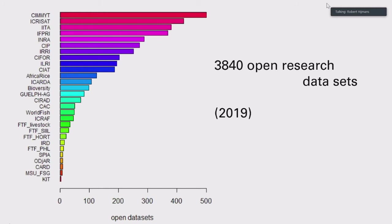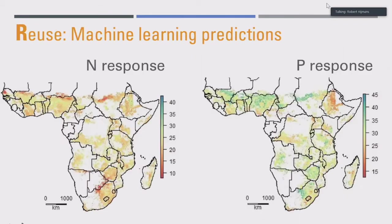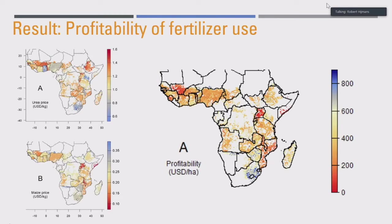We were interested in questions around soil fertility, fertilizer use, and crop responses in Africa. Camila did searches around maize and fertilizer in Guardian and in the end selected 108 datasets for 760 locations — about 12,000 individual observations on crop maize responses to fertilizer. We built machine learning models to understand response to nitrogen and phosphate, then did similar work with input and output prices to look at fertilizer profitability under certain scenarios across the continent. This work is currently under review.